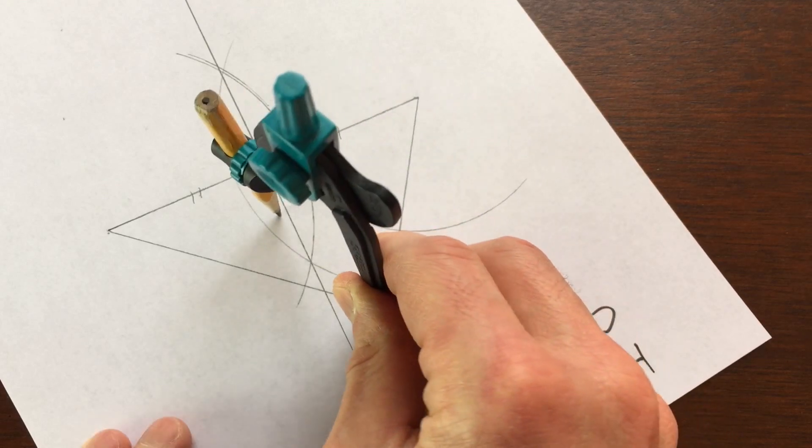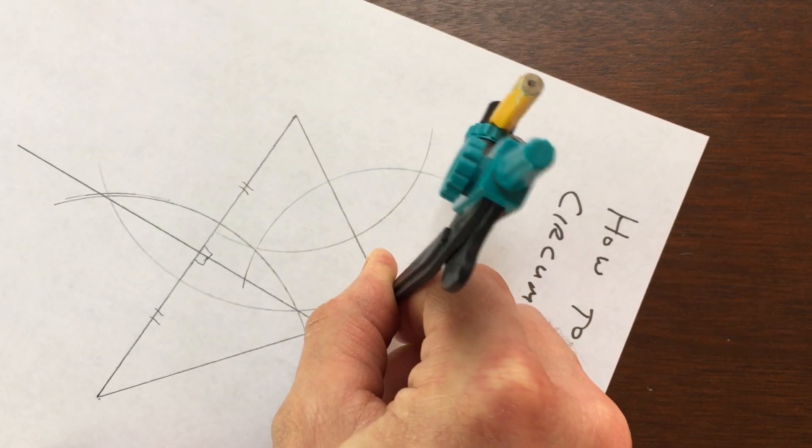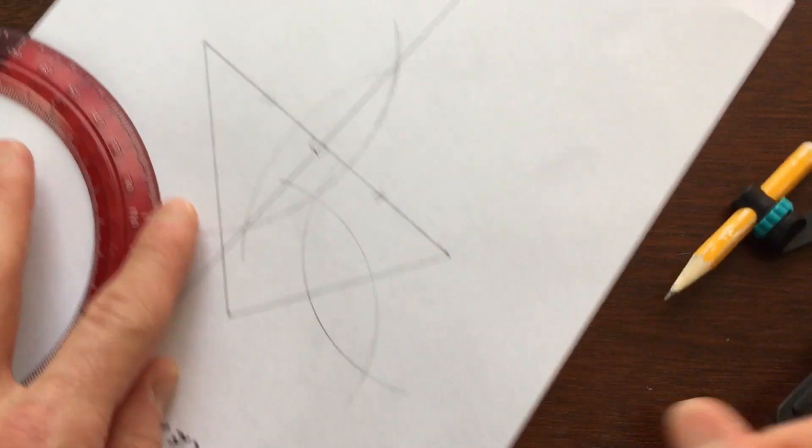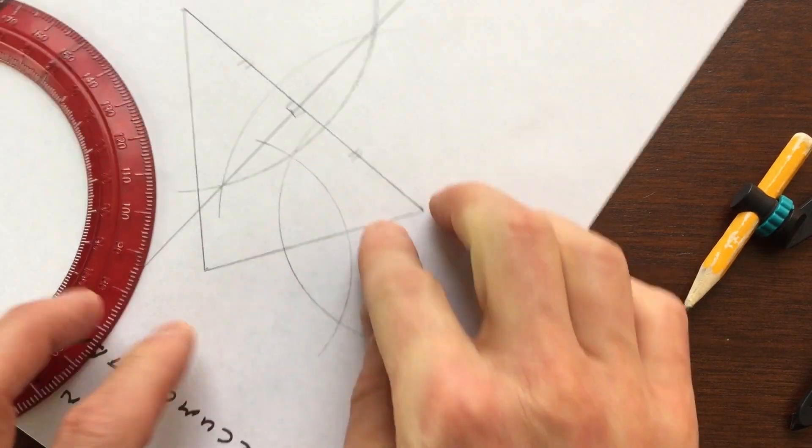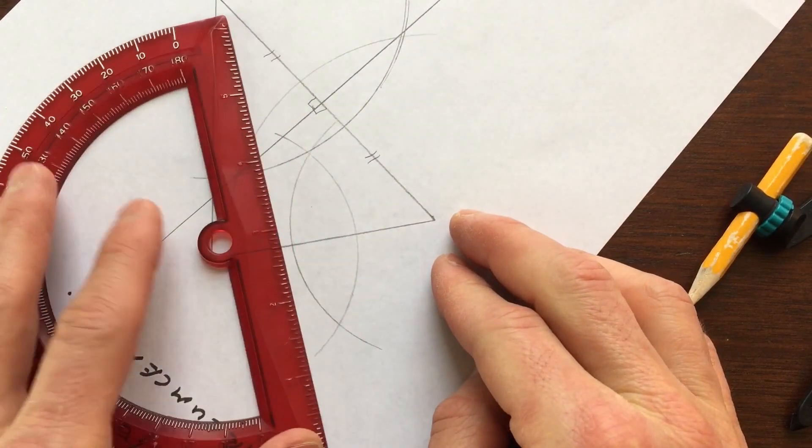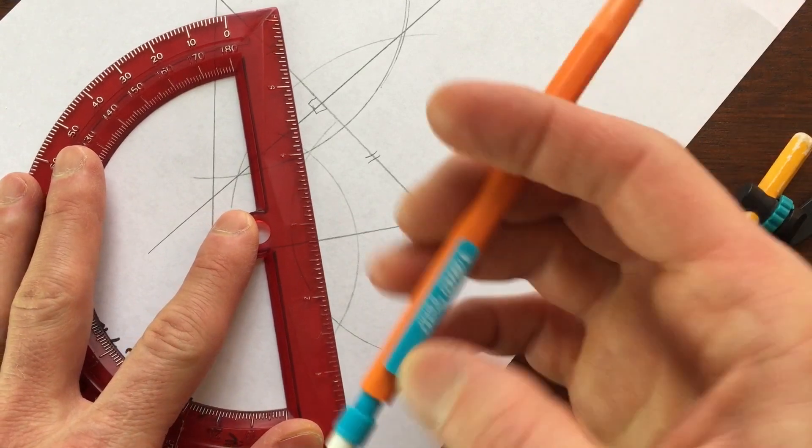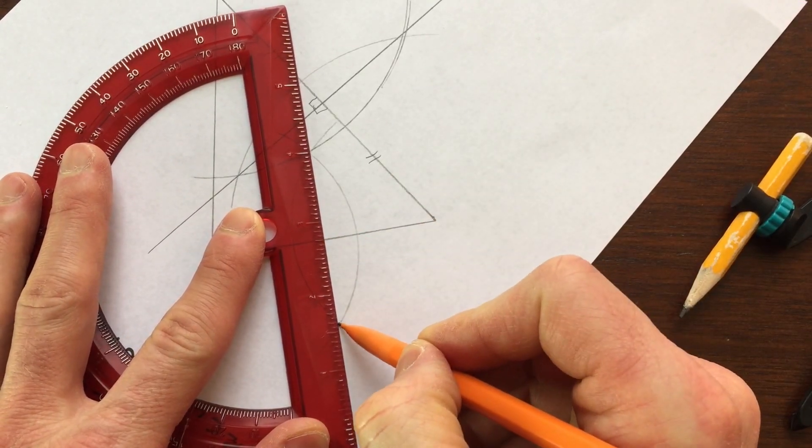I'm just going to make a continuous arc just to keep it simple for us here, and you can see they're crossing at two points here and here. So now we're going to go ahead and draw a line segment through those two points, and that's going to be our perpendicular bisector.